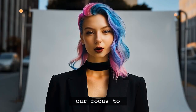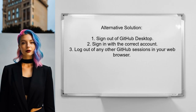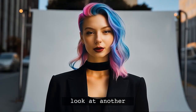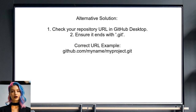Now let's shift our focus to a different response. An alternative solution from another user suggests signing out of GitHub Desktop and then signing back in with the correct account. If you have multiple accounts, make sure to log out of any sessions in your default web browser as well. Another user's solution involves correcting the repository URL in GitHub Desktop — they realized they had spelled the URL incorrectly, using myproject.it instead of myproject.git.